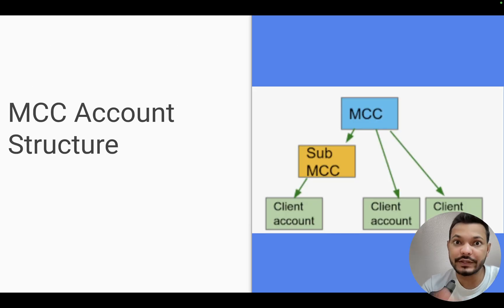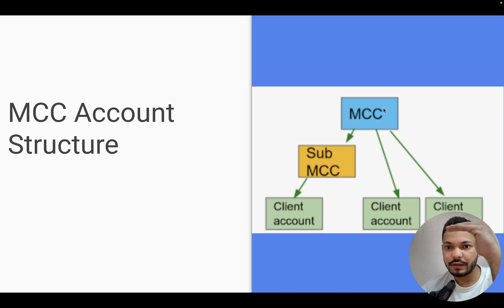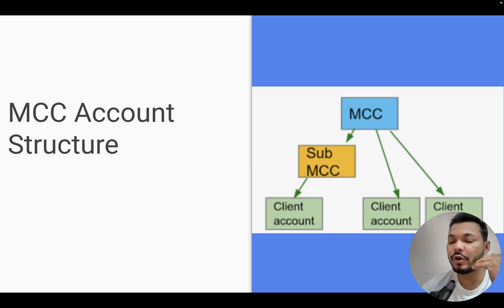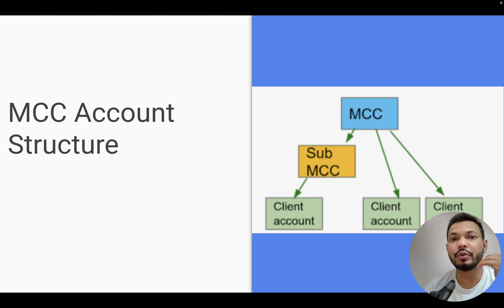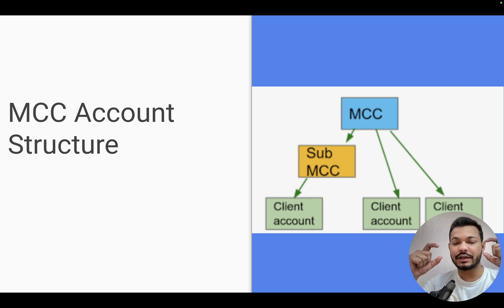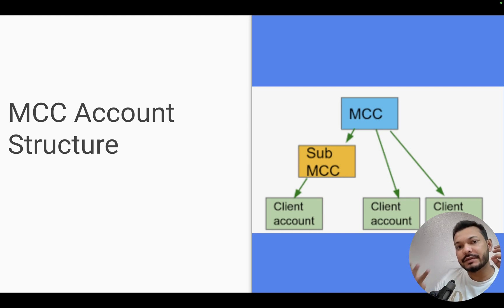If I walk you through the structure: we can have one MCC account at the top, below which we can have another MCC called a sub-MCC. For example, if we have one agency with two different managers, both of these managers are going to have two MCCs called sub-MCCs, and then every sub-MCC is going to have their respective clients.